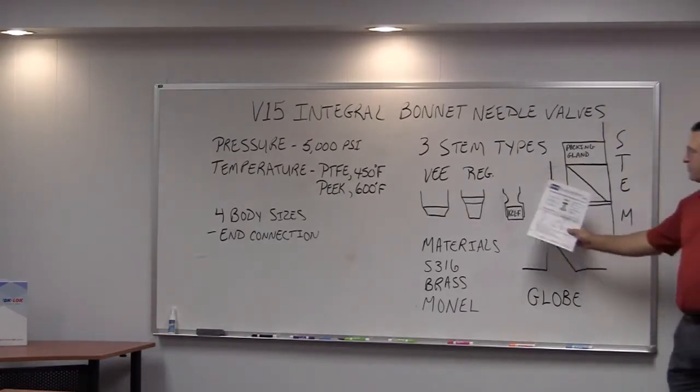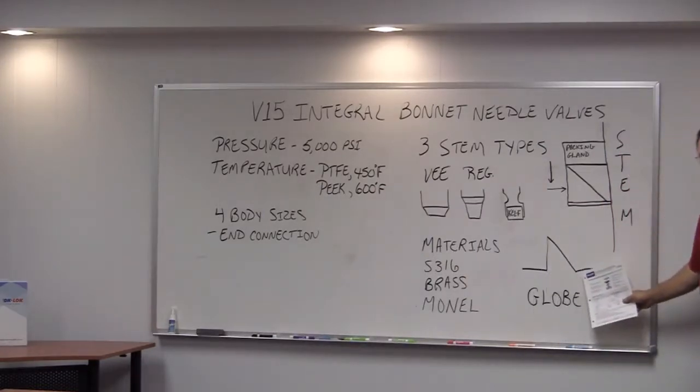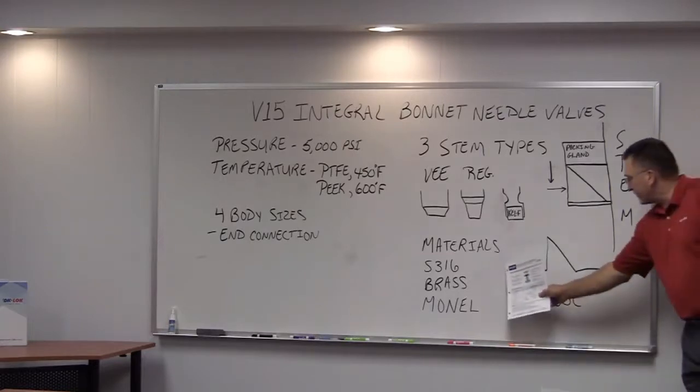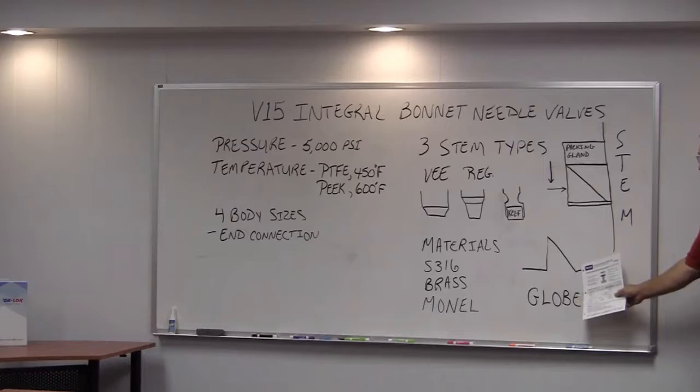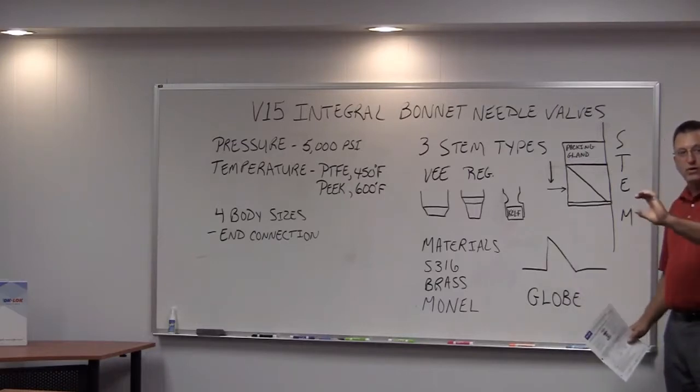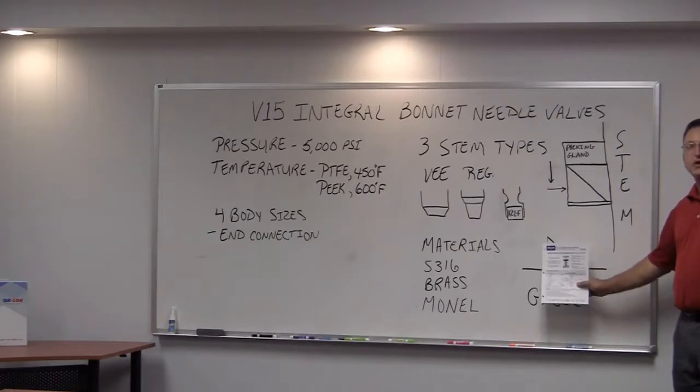Another thing about this valve as opposed to a straight through ball valve is the pattern of flow through the inside. It is referred to as a globe pattern because the flow comes in, it goes up, it goes down, and then it goes out. So it is a directional needle valve. And it has an arrow for the flow on the outside of the forging as to which direction it should be installed in.